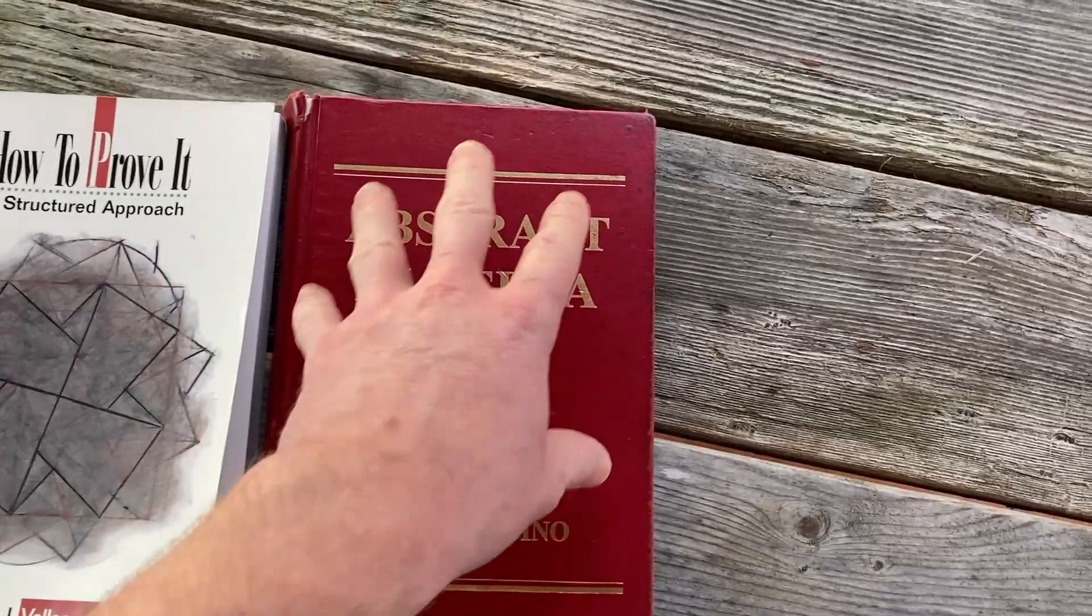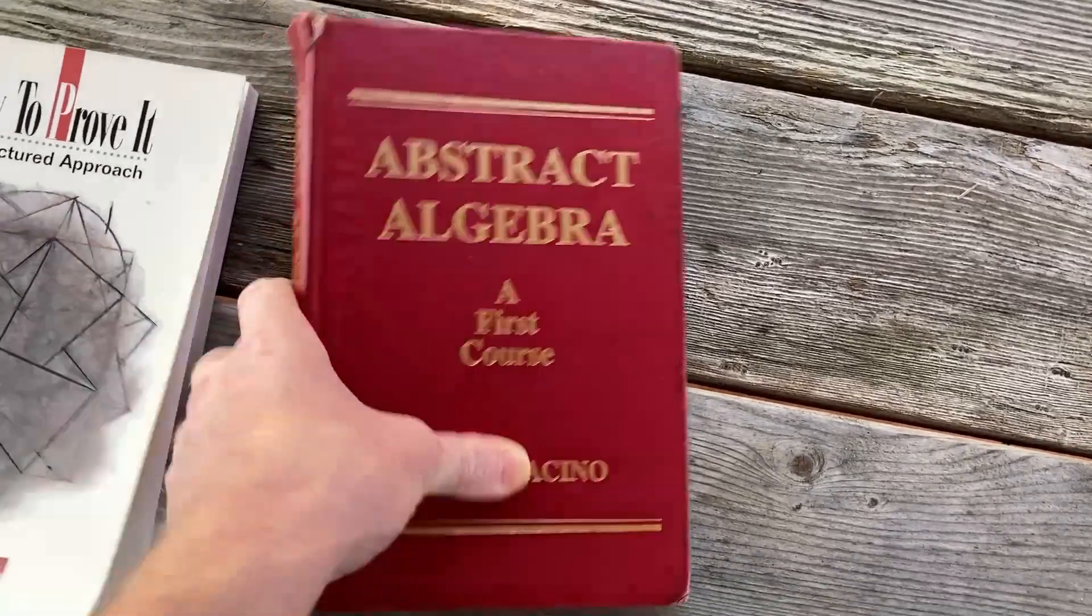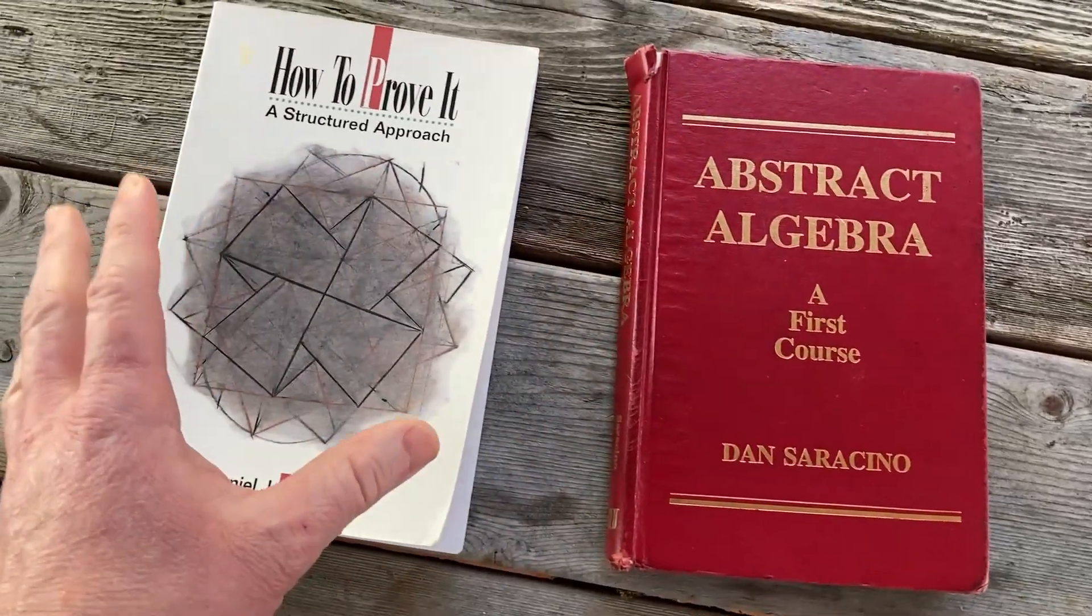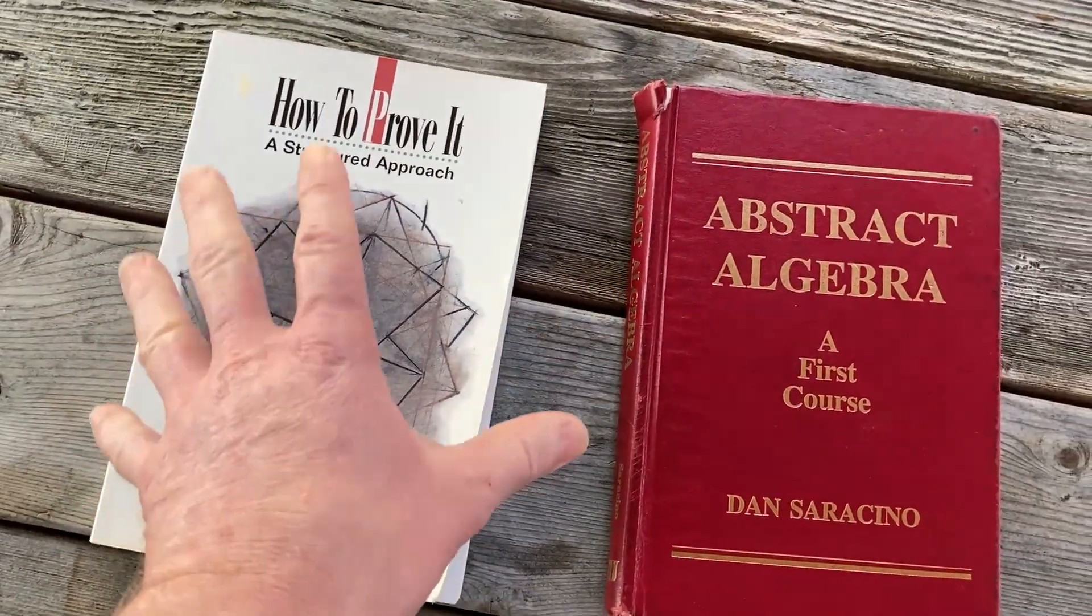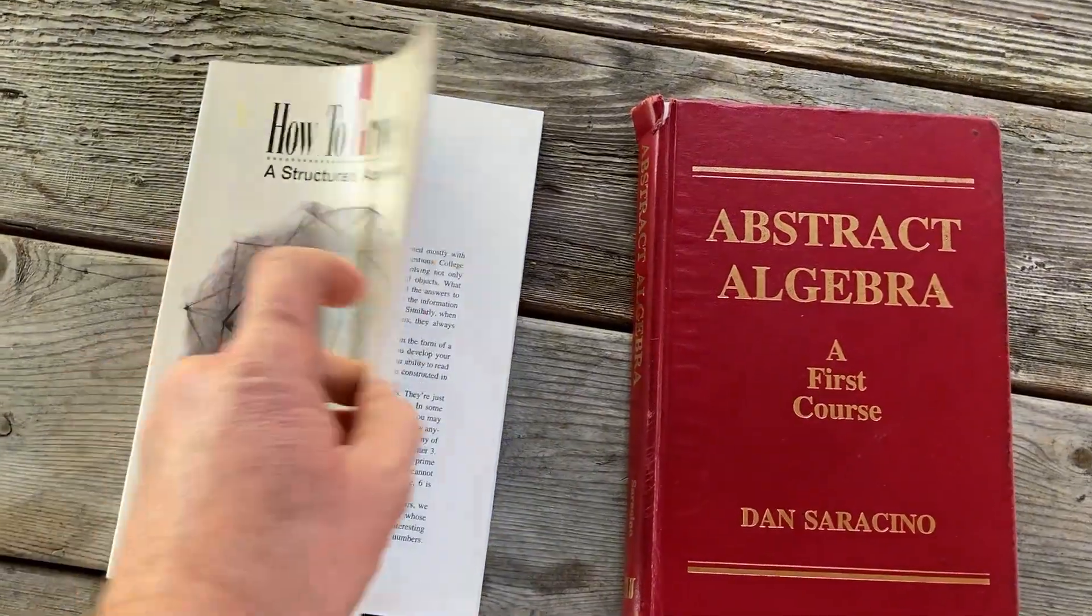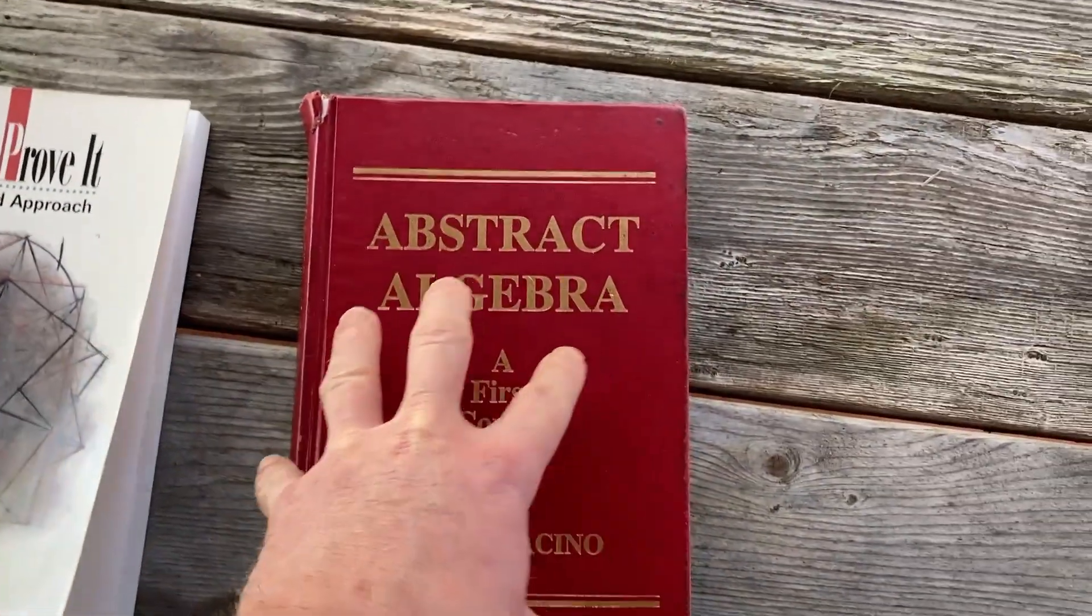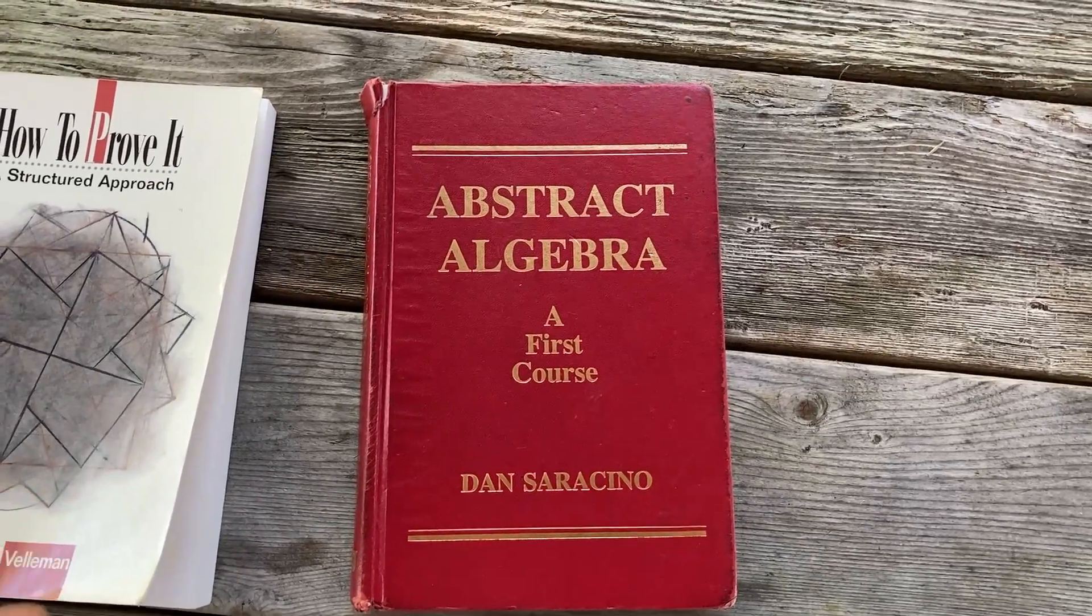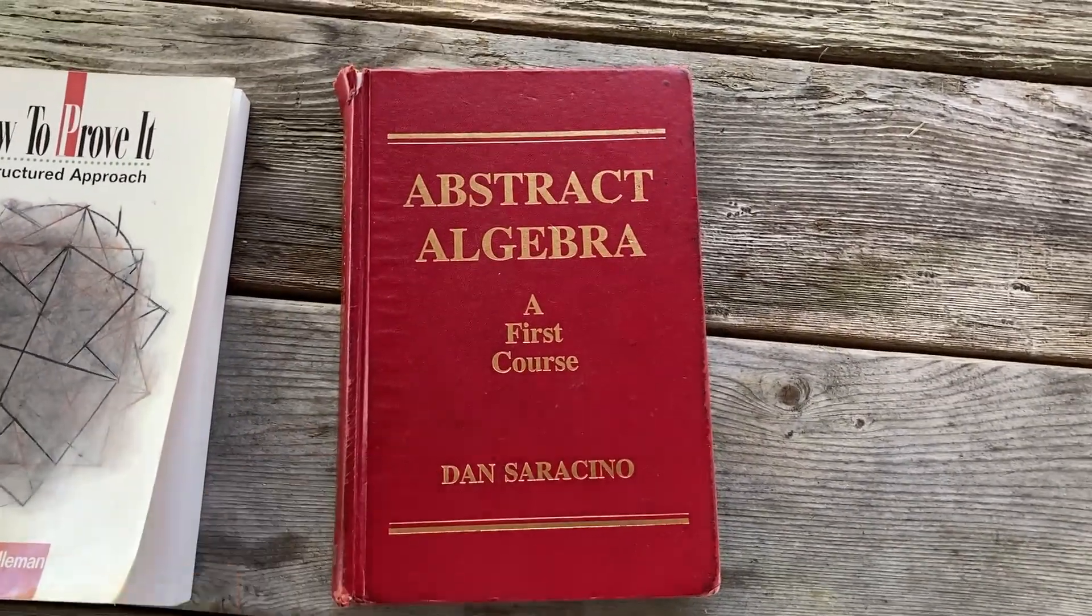The proofs that you need to construct in abstract algebra at the beginning of a course are actually very simple. So once you have some logic background and some proof writing background, you can actually jump into this and start doing some really beautiful mathematics. Let's go ahead and open up this book and take a look inside it.